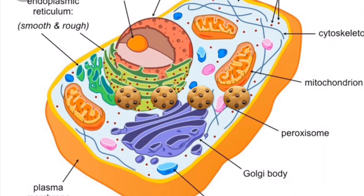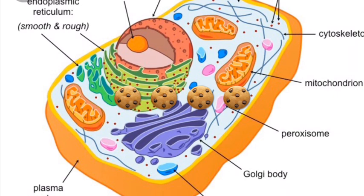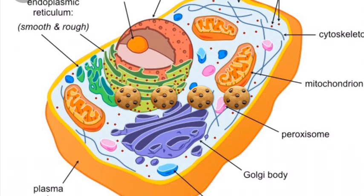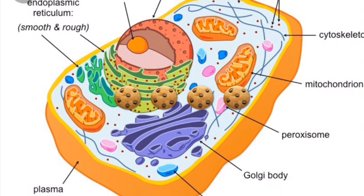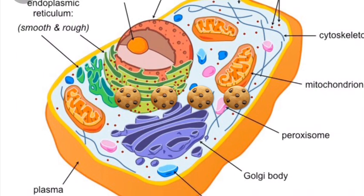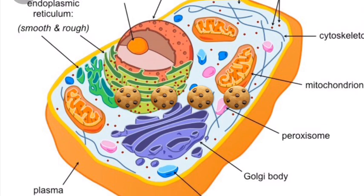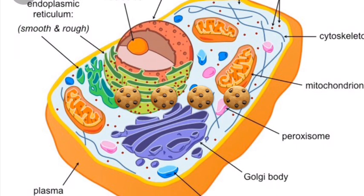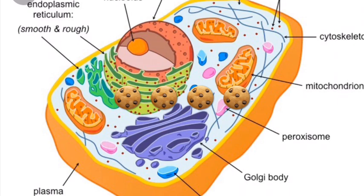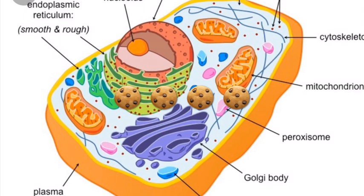The Golgi apparatus modifies, sorts, and packages proteins and lipids for storage or transport out of the cell.